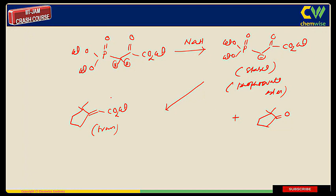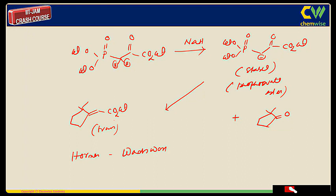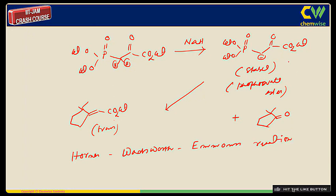That is the beauty of this reaction: it derives from a stable ylide, which leads to a trans product. This is a very important named reaction — if you remember, this scientist is Horner, and the modification of the ylide by a phosphonate ester leads to a reaction called the Horner–Wadsworth–Emmons reaction. This is a very interesting named reaction. Just note that as this is a stable ylide, it produces a trans product.